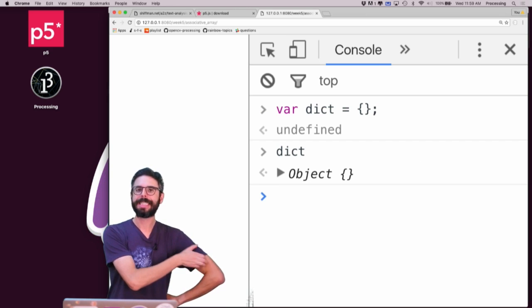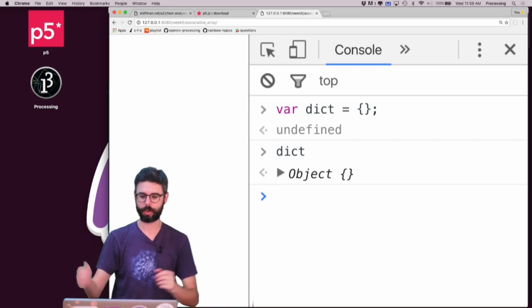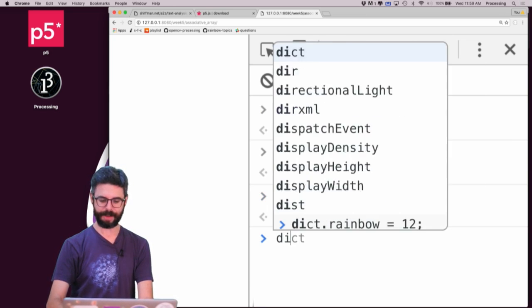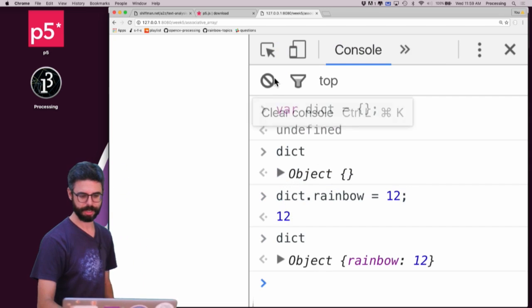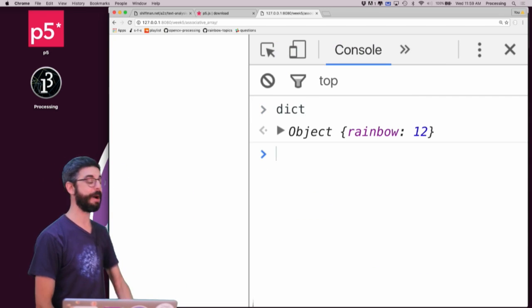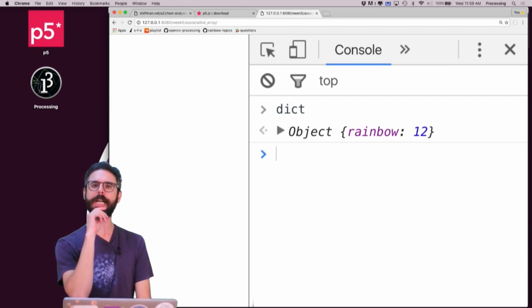So, what if I want to say the number of times the word rainbow appeared in that dictionary is 12. Well, you know I could say dictionary.rainbow equals 12. And now if I look at the dictionary, you can see, let me just do this again. You can see, look, the object now has the word rainbow associated with the number 12.